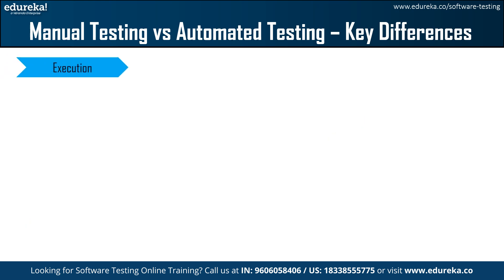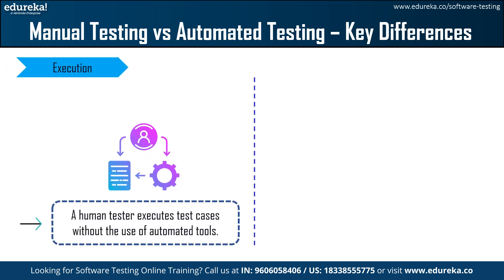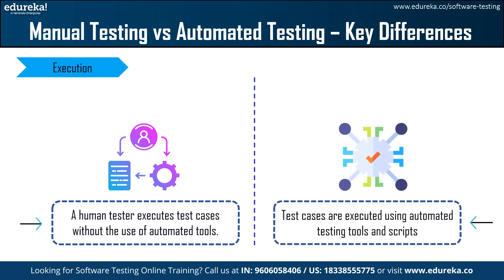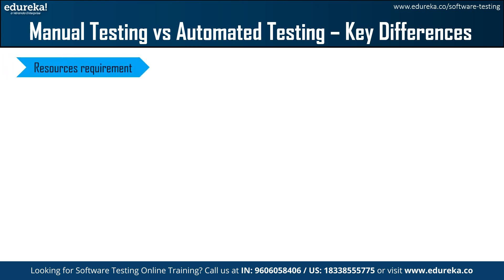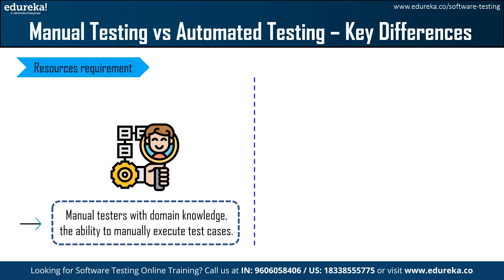Next is execution. Human testers execute test cases without the use of automation tools, interacting with the software user interface, entering data, and monitoring results. Test cases are executed using automation testing tools and scripts — tools are used to simulate user interactions, validate data, and generate test reports. Next is resource requirement. Manual testers require domain knowledge, attention to detail, and the ability to manually execute test cases, including knowledge of testing methodology, test case design, and reporting, as well as access to various test environments.